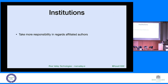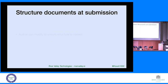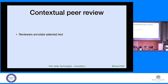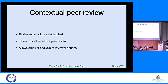Institutions need to take more responsibility — at the moment they often don't. They need a research integrity officer. Long term, authors should modify submissions to ensure structure inside documents. If you can convert a Word submission to XML at submission stage, that saves a lot of time and gives you more structured data. Once you have that structure, you have contextual metadata and better-structured peer review. These are all things we can do in future to ensure more structure right from the beginning. Thank you very much.